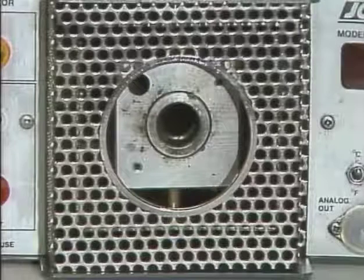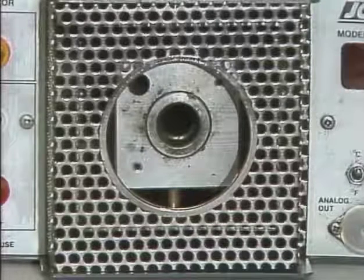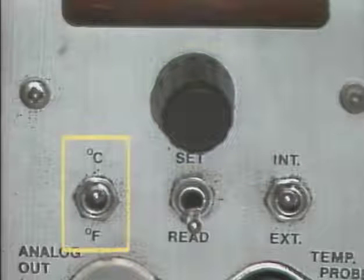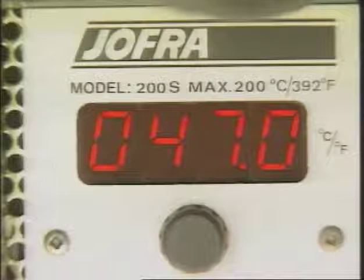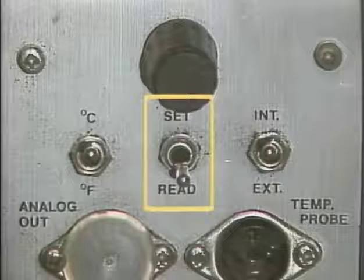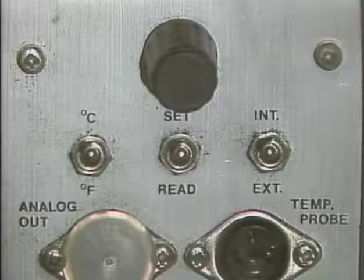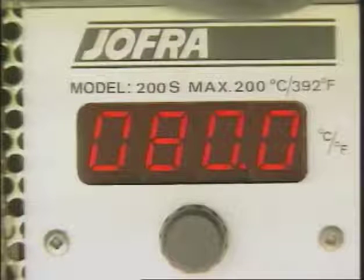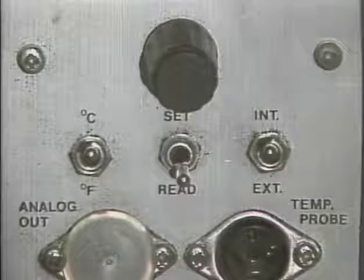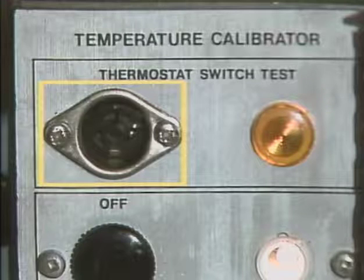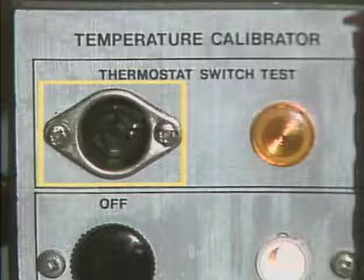As suggested by its name, the heating well provides heat to the insertion tube and to any sensing bulb inserted into the tube. A temperature set knob is used to select the amount of heat to be provided by the heating well. A Celsius/Fahrenheit switch is provided to select whether that temperature is measured in degrees Celsius or in degrees Fahrenheit. A temperature display window shows the selected temperature or the measured temperature at the heating well. A set switch is used to determine whether the temperature that's displayed is the selected or measured temperature. When the set switch is in the set position, the display window shows the temperature that's selected using the temperature set knob. When the set switch is placed in the read position, the display window shows the actual temperature at the heater well.